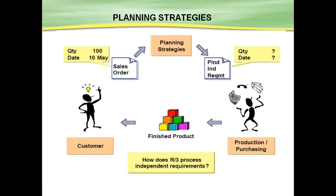Now we'll look at the different kinds of production strategies in production planning. There are two kinds of production strategies that work in the production planning module. The first one is called Make to Order scenario. The second one is called Make to Stock scenario. A company that will start producing only after getting a sales order from the customer is considered a Make to Order company, because they won't produce anything without a sales order.